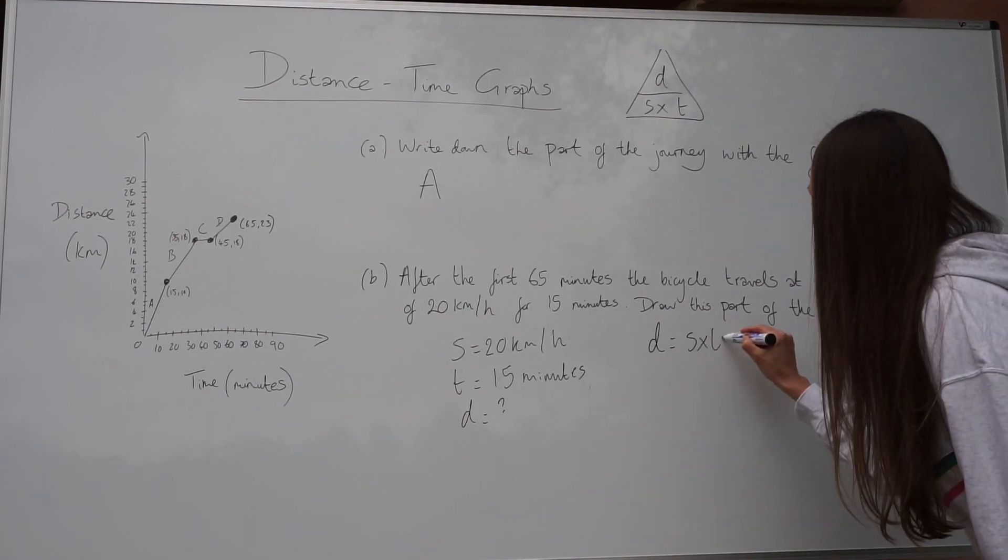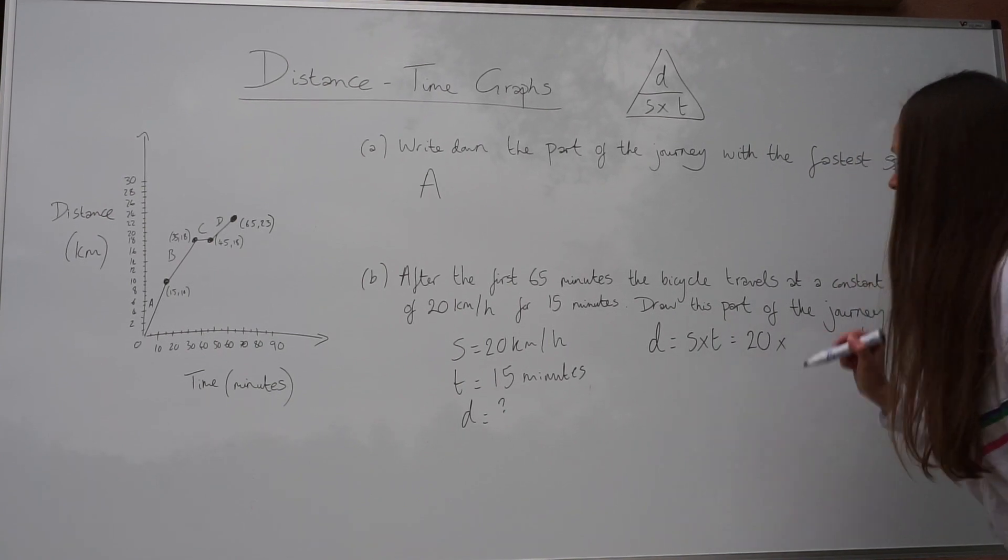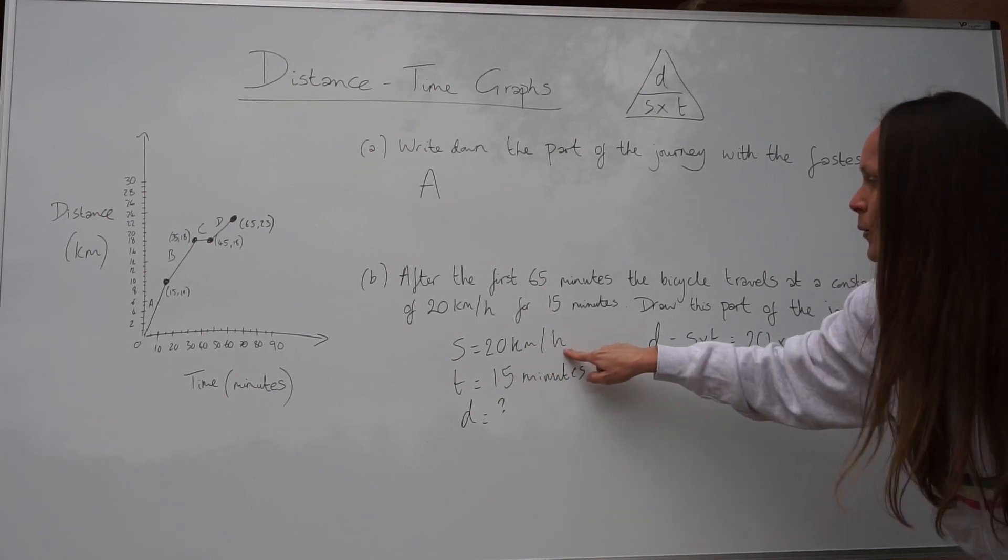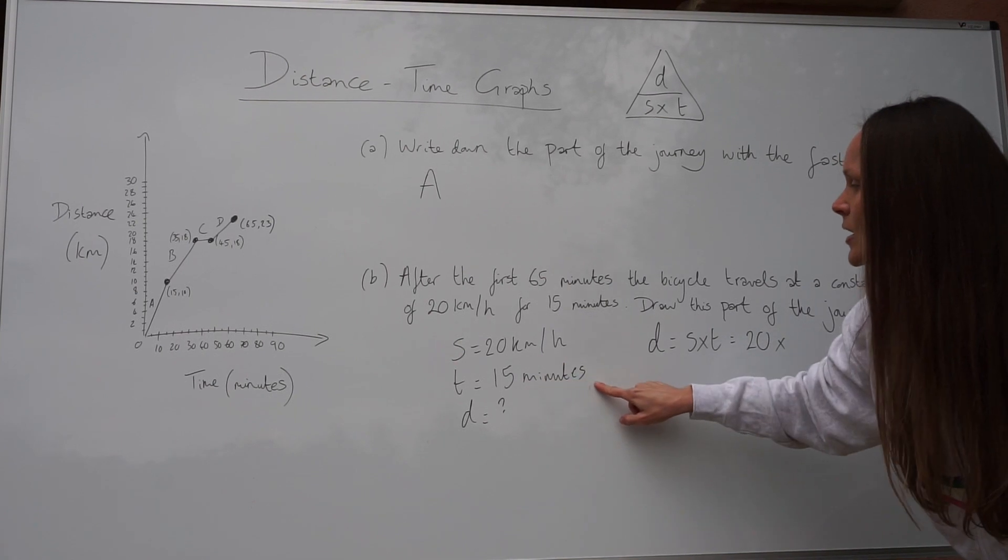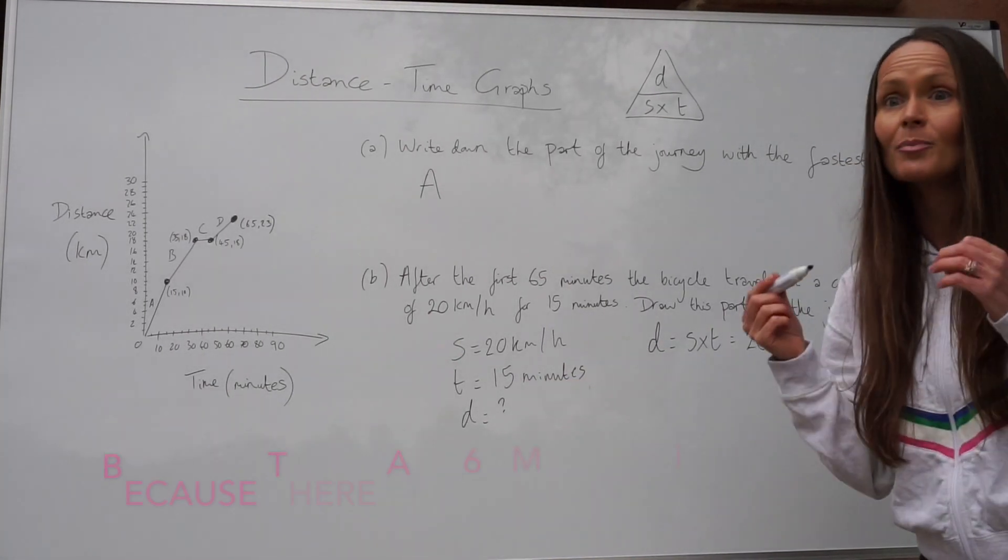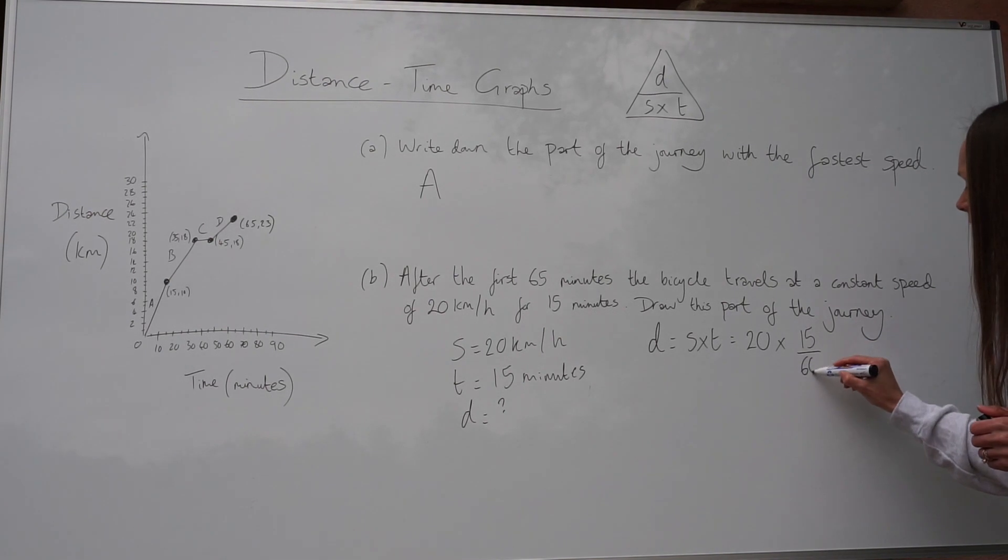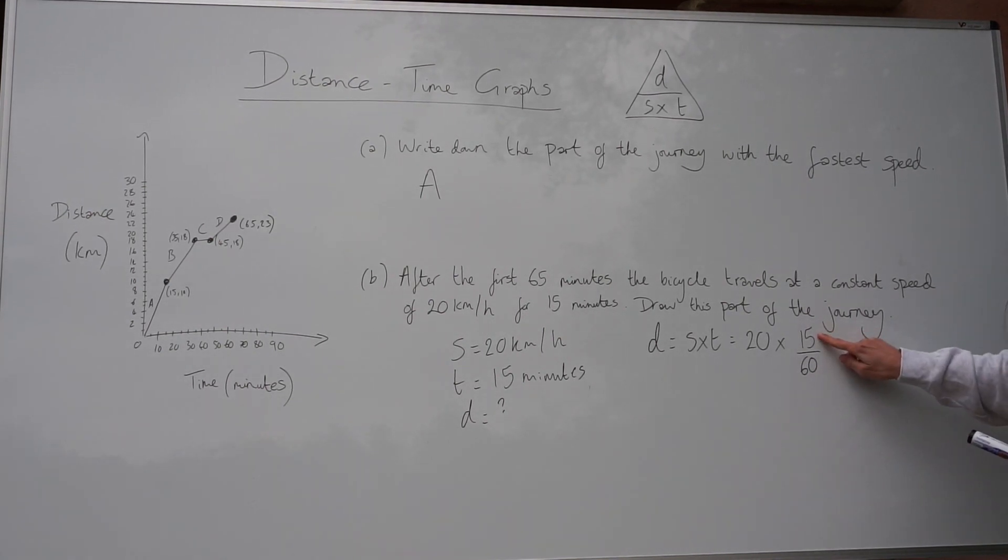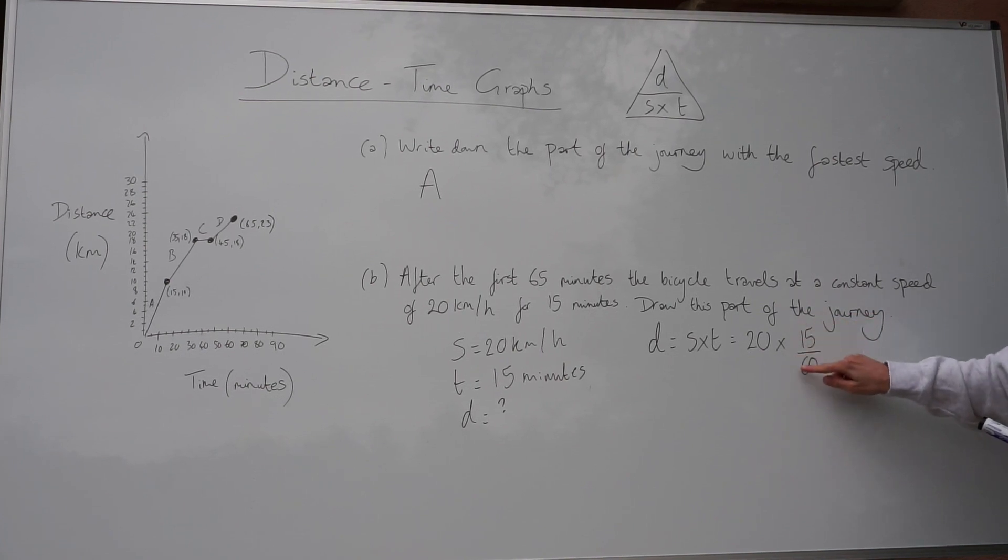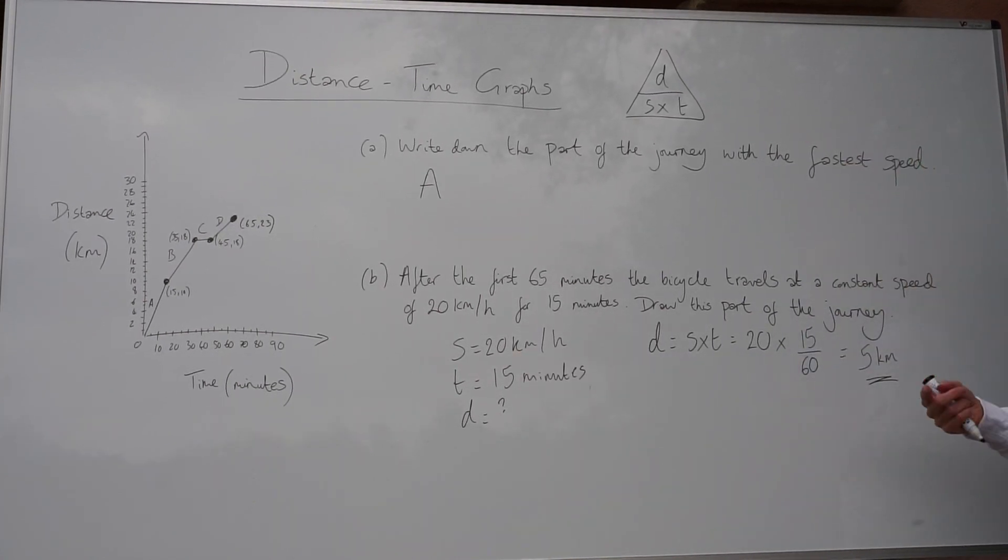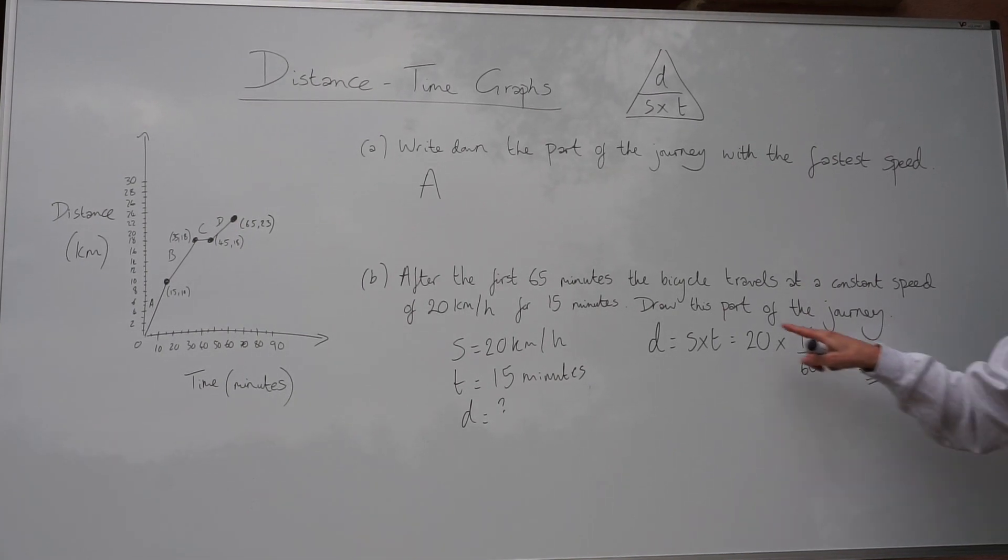So if we do that, the speed is 20. Now we have to be careful with the time because the units for speed are kilometers per hour. And here the time is in minutes. Whenever you want to change minutes into hours, you must divide by 60. So when you write the number 15, you need to give it a denominator of 60. That means you're dividing this by 60 and you're turning the minutes into hours. So when you calculate this, it gives you five. And the distance is in kilometers because this was in kilometers per hour. So we know that the bicycle travels five kilometers in 15 minutes.